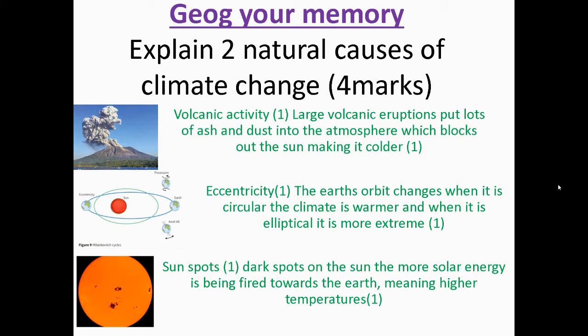The second cause is eccentricity — all about Earth's orbit around the sun. The Earth's orbit changes: sometimes it is more circular, sometimes more elliptical. With a circular orbit, the climate is usually warmer, whereas an elliptical orbit is more extreme. At some points the Earth is further from the sun, at other points it is closer, leading to glacial and interglacial periods.